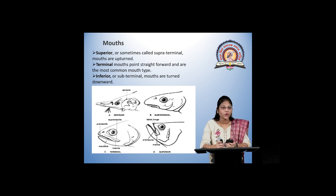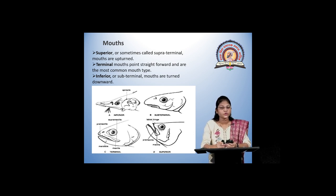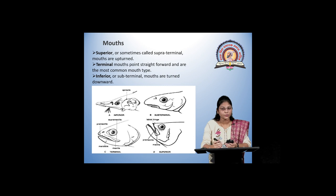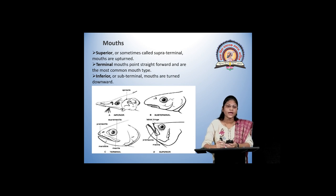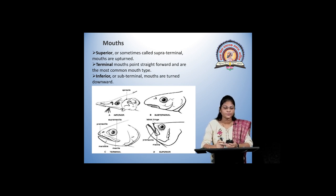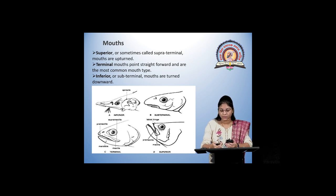The next important organ in fish is the mouth. The mouth shows variation like superior, terminal, and inferior. In the superior type, the mouth is turned in an upward direction — that is, surface-oriented. In the terminal mouth, the mouth is located at the snout region, pointing straight forward. And in the inferior type, the mouth is turned downward, in the bottom direction.